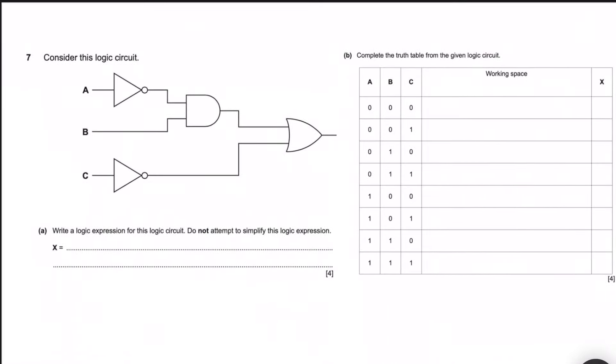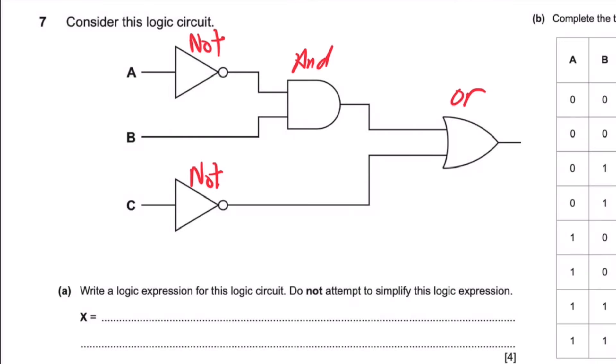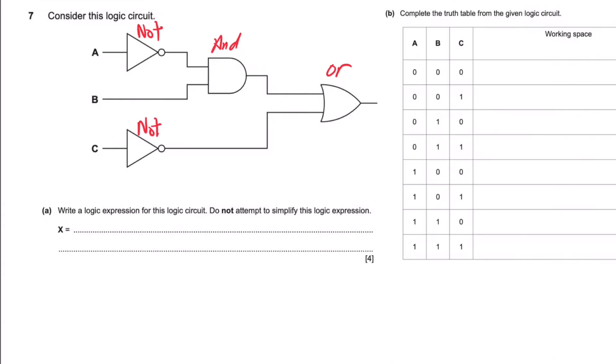Question 7: Consider the logic circuit. Let's just label these. I've got a not gate, another not, an and, and an or gate. So we need to come up with an expression. Write a logic expression for the logic circuit. Do not attempt to simplify this logic expression. So we've got not A and B. Let's look at this: not A and B. I've got or, because B and C are not connected, or not C. So I've got not A and B or not C. But I want to write this into a proper expression. I'm just going to write this out: not A and B or not C. And what I would do is I'd put that in brackets.